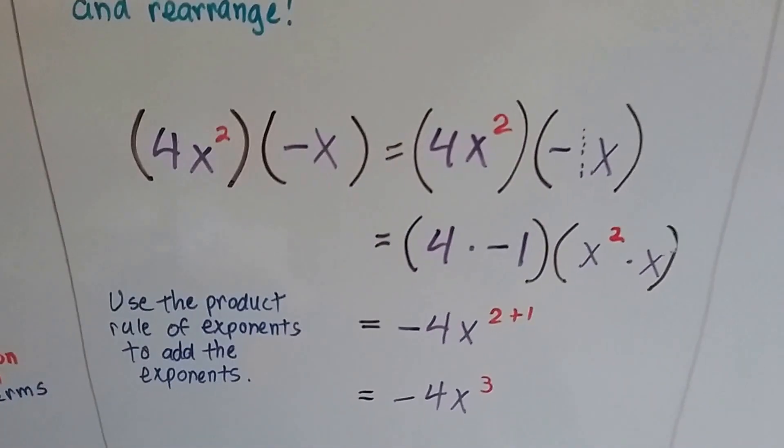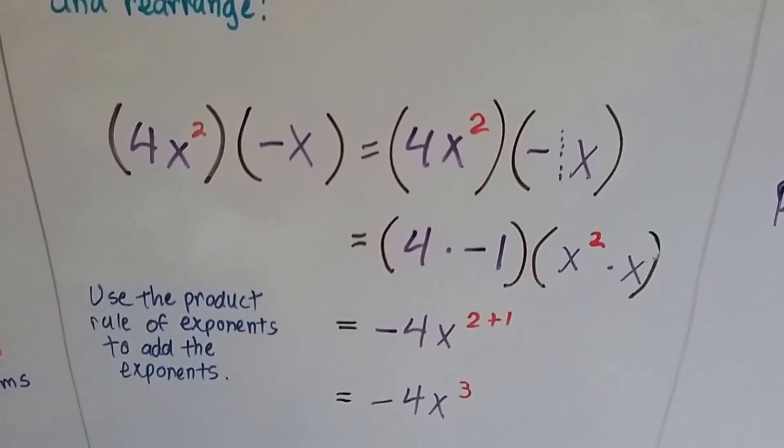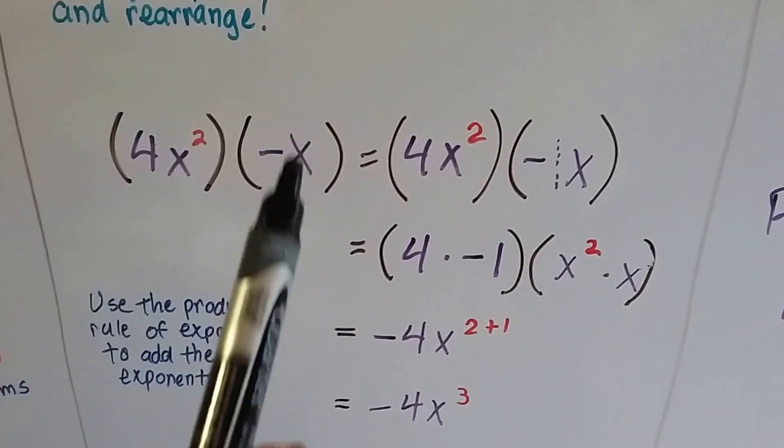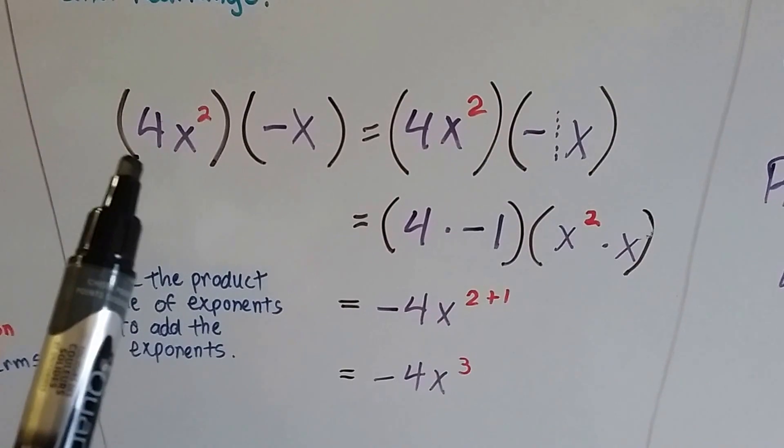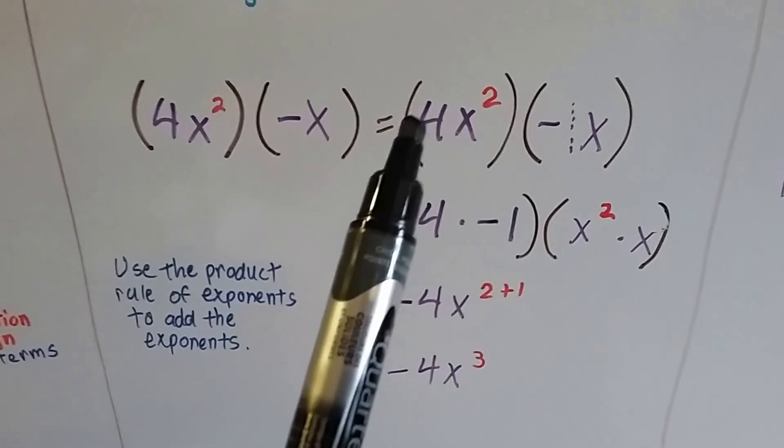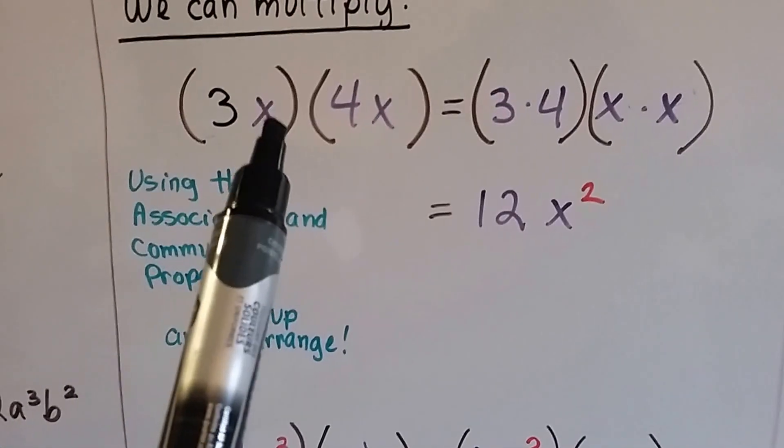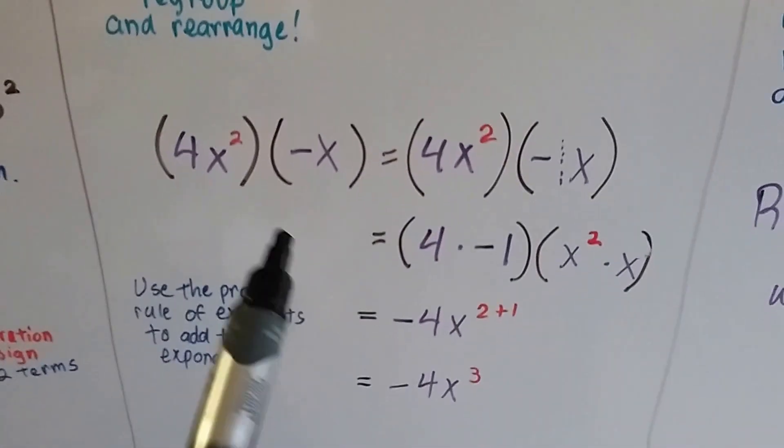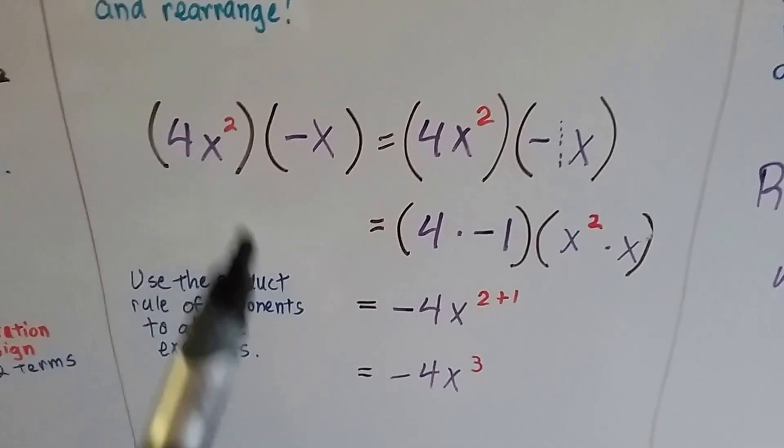Look at this one. It's a little more difficult. We've got 4x squared times negative x. Now remember, there's a negative 1 in front of that x. When variables are alone, there's actually an invisible 1 in front of there. We learned that in seventh grade. So what we do is we group the 4 and the negative 1 together. Just as we're separating the number from the variable, we separated the numbers from the variables, we're going to separate this negative 1 from the x. We're going to separate the 4 from the x squared.